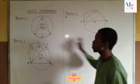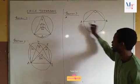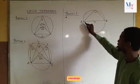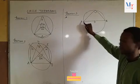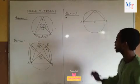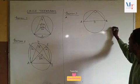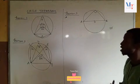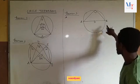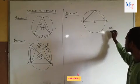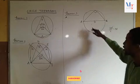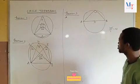The proof of theorem 3 also follows from theorem 1: the angle at the center is twice the angle at the circumference. The angle at the center here is the angle on a straight line, which is 180 degrees. Therefore, since the angle at the center is 180 degrees, the angle at the circumference will be half of that — 180 divided by 2 — which is 90 degrees. That is why the angle in a semicircle is 90 degrees.